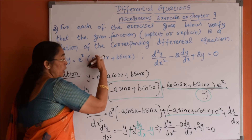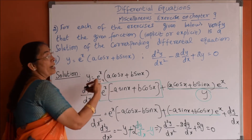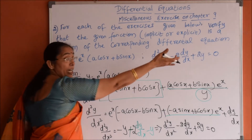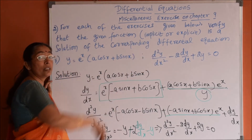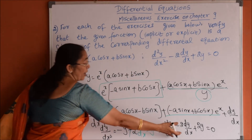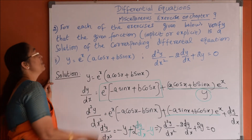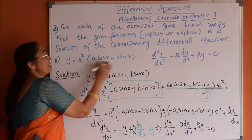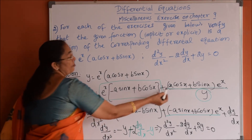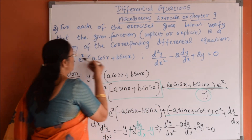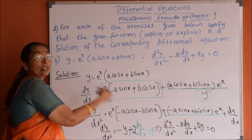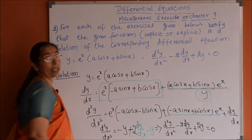We can find dy by dx and d square y by dx square and substitute to prove it is 0. But instead, deriving the differential equation which satisfies the given equation is the simplest way — wherever terms like y and dy by dx repeat, the differential equation forms automatically.